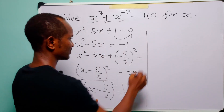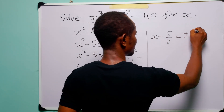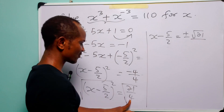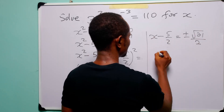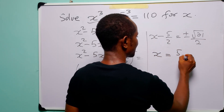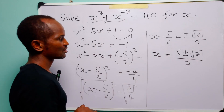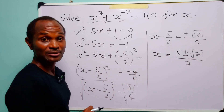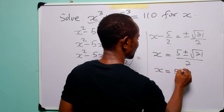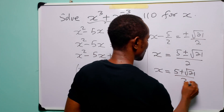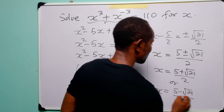Taking square roots: x − 5/2 = ±√(21)/2, since √4 = 2. Adding 5/2 to both sides: x = (5 ± √21) / 2. Therefore x = (5 + √21)/2 or x = (5 − √21)/2.